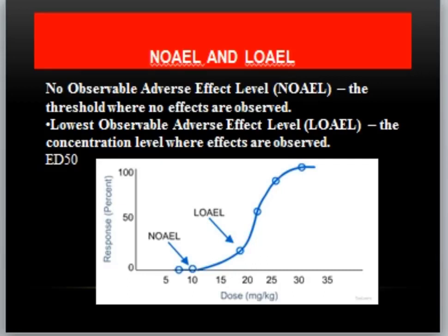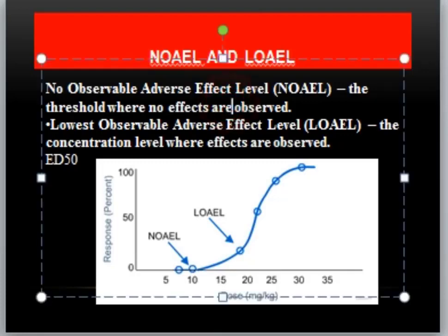NOAEL is the threshold where no adverse effects are observed — usually normal effects are produced. LOAEL (L-O-A-E-L) is the concentration level where adverse effects are first observed. For example, up to 10 mg dose there is no adverse effect — response is zero. Then response increases and if we look at toxic response versus efficacy response, both are studied. Adverse effects are observed at more than 10 mg.